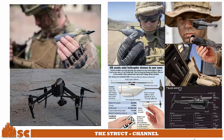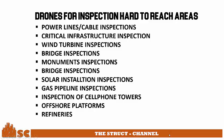This picture shows a small drone utilized for tactical purposes — a kind of drone that is very slick and cannot easily be detected while flying because of its size. Drone pole inspections can be used where there are hard-to-reach areas such as power lines, cable inspection, critical infrastructure inspection, wind turbine inspection, bridge inspection, monument inspection, solar installation inspection, gas pipeline inspection, inspection of cell phone towers, offshore platforms, and refineries.